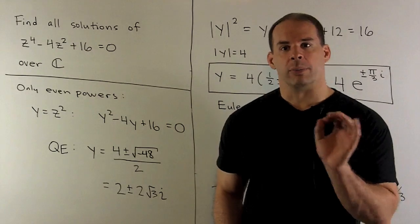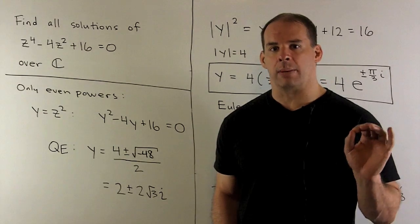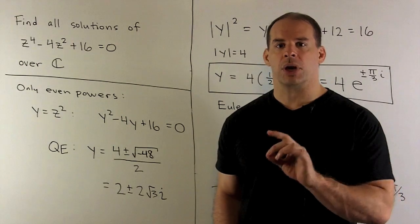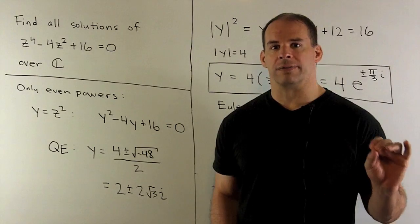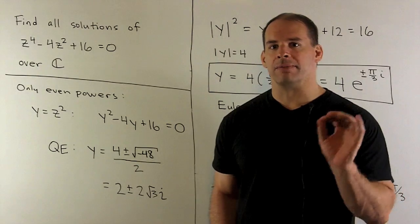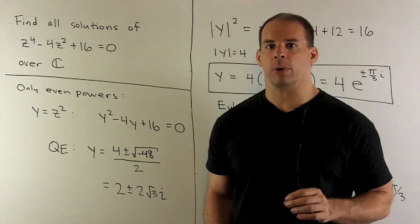Now, we have a polynomial of degree four over the complex numbers, so it factors completely into linear factors. That means we have four solutions, possibly with multiplicities.